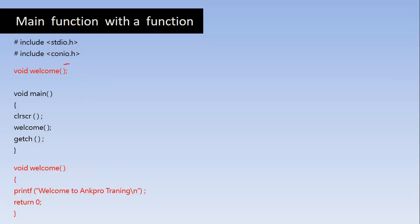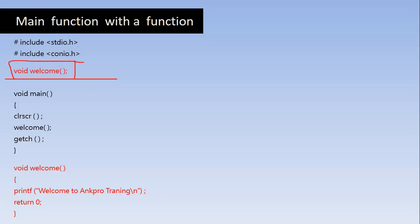The function declaration ends with a semicolon, whereas the function definition contains the entire code that the function is going to perform — the actual code resides in the function definition. In the declaration section we just give the function return type, the function name, and the function parameters inside the pair of brackets, followed by a semicolon. We can also call this the function prototype.